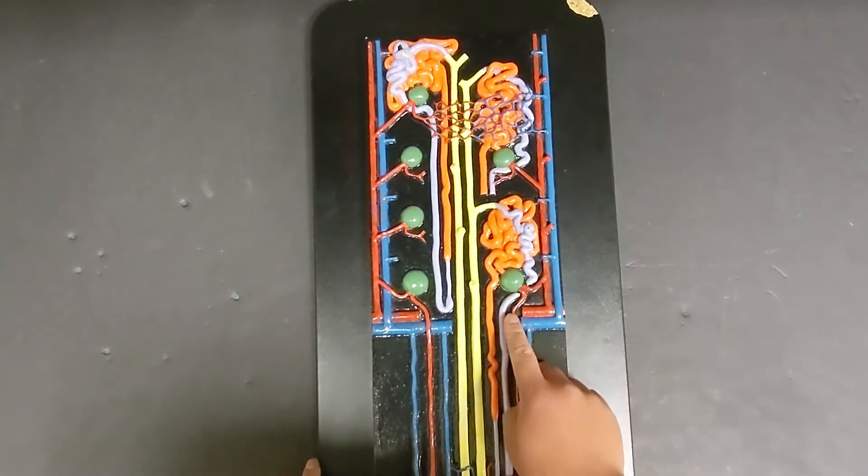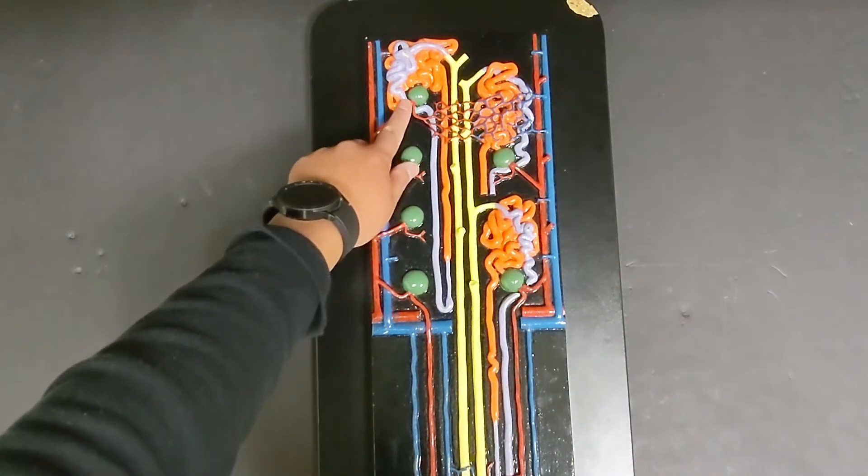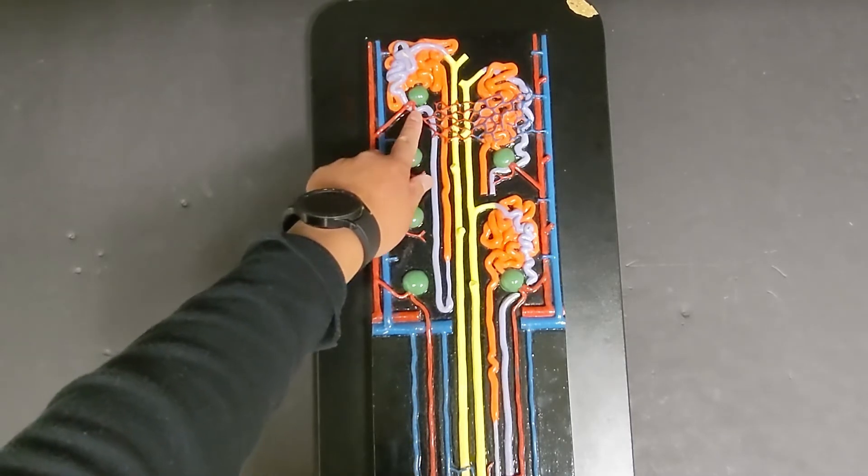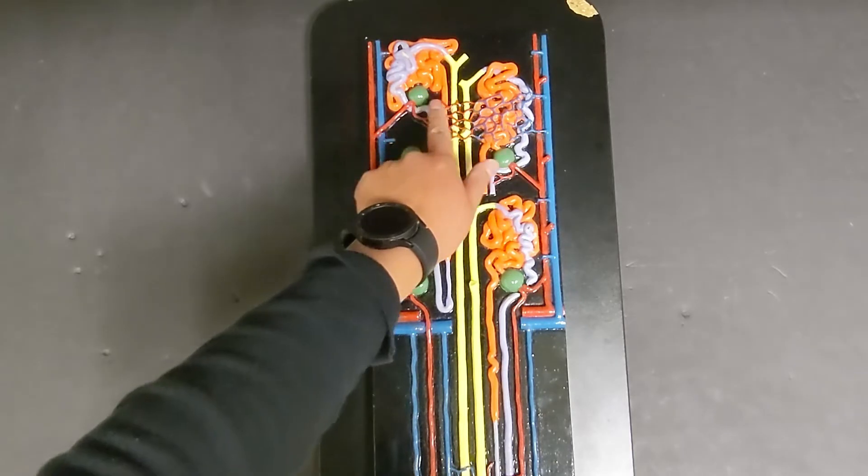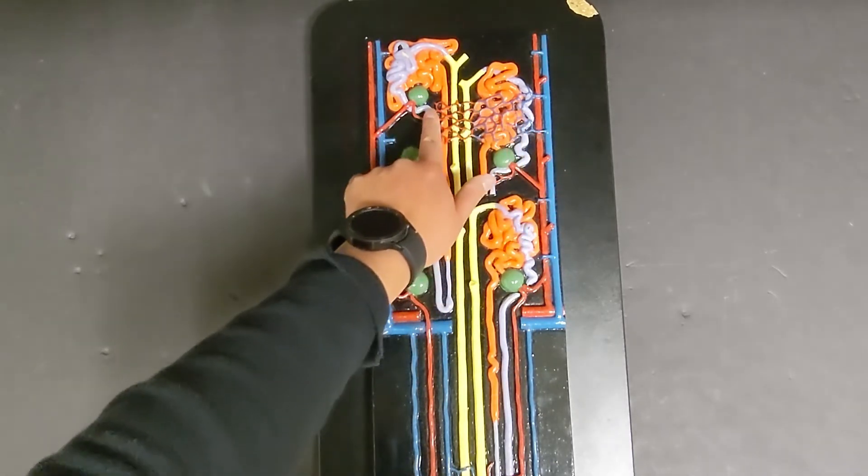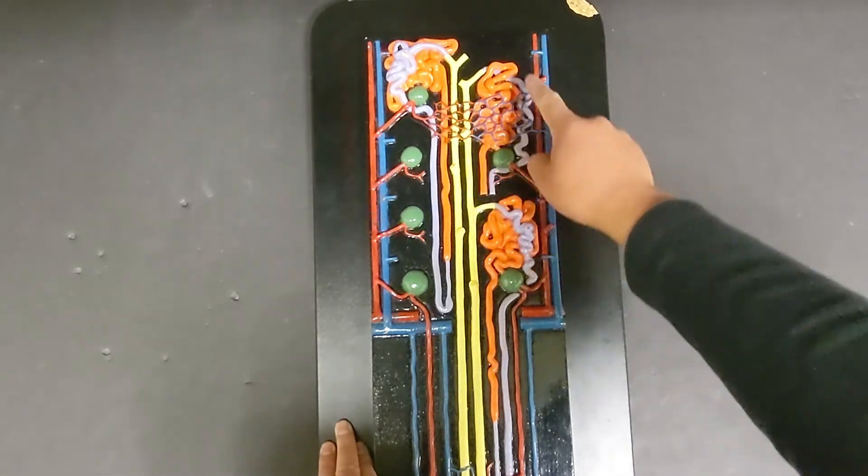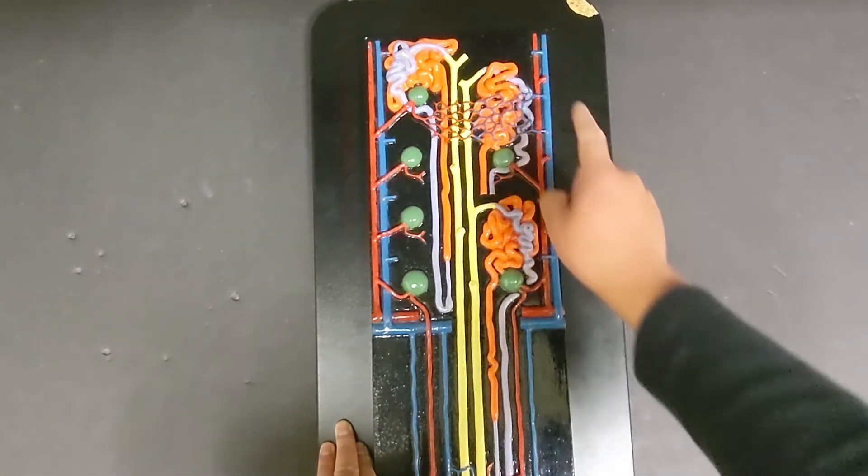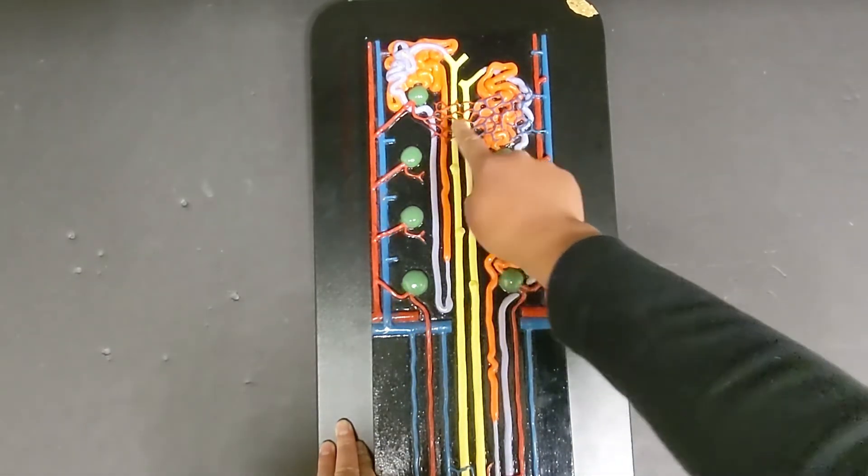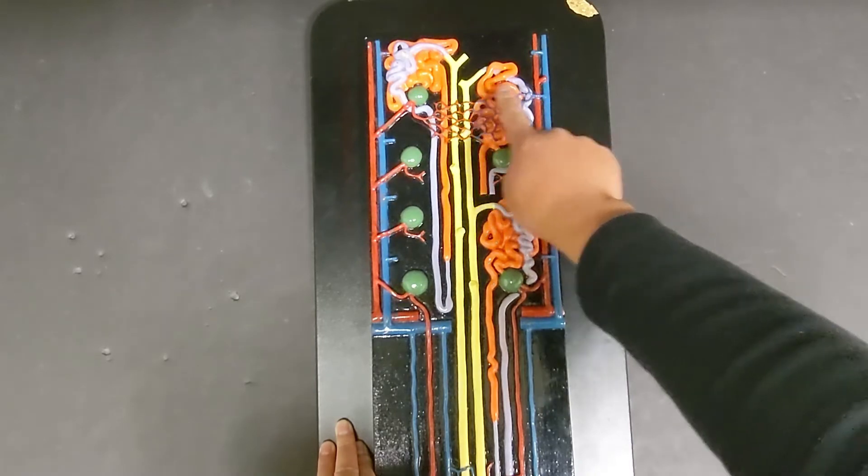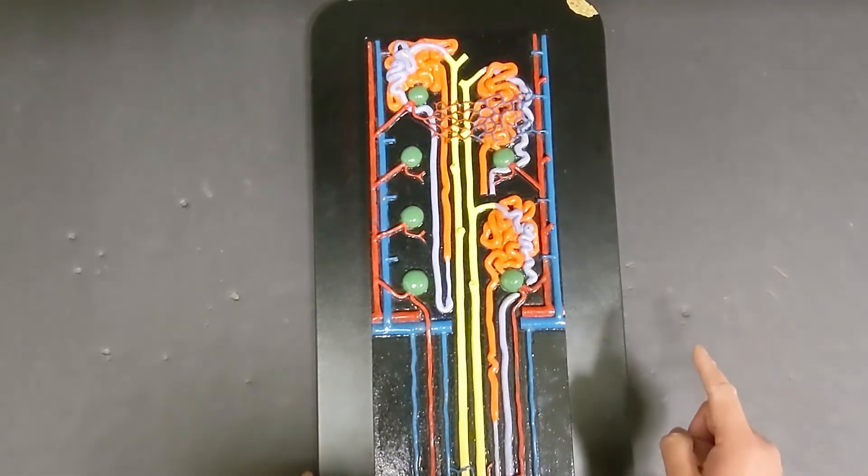And the efferent arteriole can go to one of two places. If you look at this one over here, here's your efferent arteriole, and this group of blood vessels or this bed of capillaries is going to have a specific name. So these capillaries are going to be surrounding your proximal and distal convoluted tubules. These are called peri, for around, tubular capillaries. So peritubular capillaries are surrounding the proximal and distal convoluted tubules.